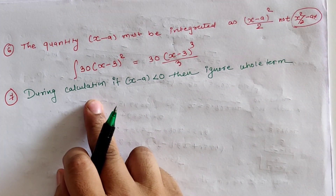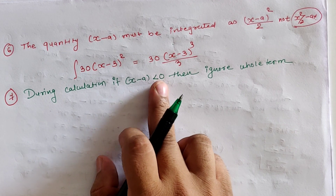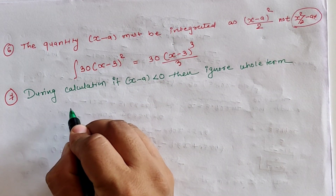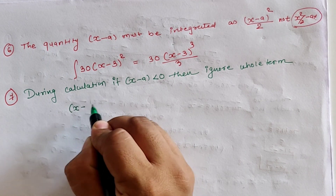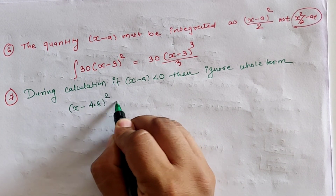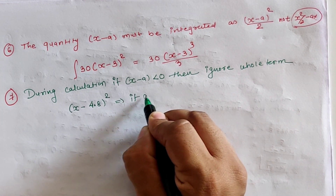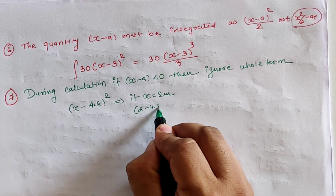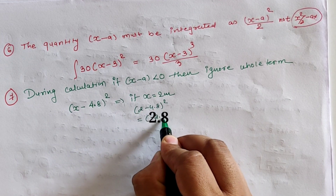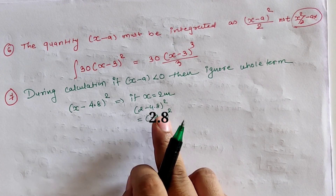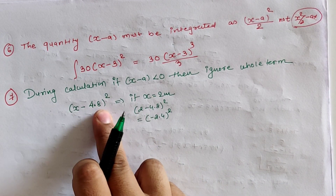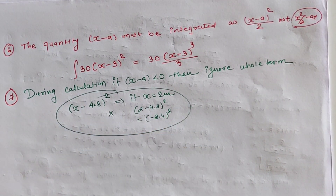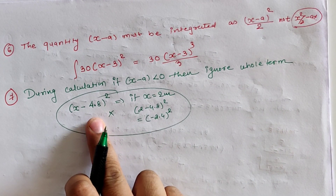The seventh assumption is that during calculation, if the value of (x − a) is less than zero, we have to ignore the whole term. For example, for the term (x − 4.8)², if we put x = 2 meters, we get (2 − 4.8)², which gives a negative value inside the bracket. Since (x − 4.8) is less than zero, we ignore the whole term and take it as zero.